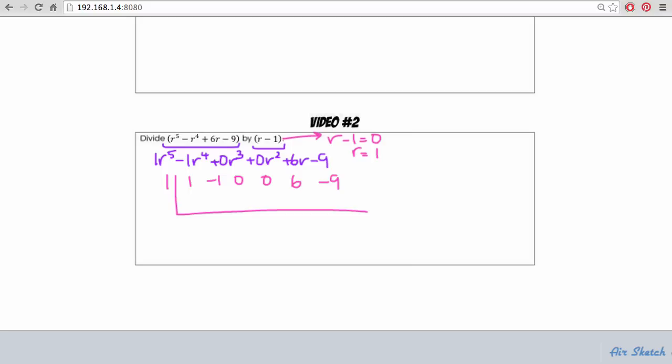Now if you recall we'll start by dropping our first term, multiplying 1 times 1 and the product will go up above the bar in the next column. Next, we'll add down so negative 1 plus 1 is 0 and repeat the same process.